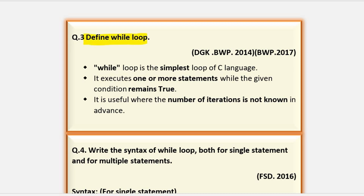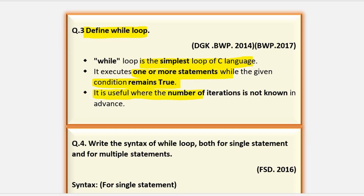Define while loop. While loop is the simplest loop of C language. It executes one or more statements while the given condition remains true. When the condition is true, the set of statements repeats. As soon as the condition is false, the loop is terminated. It is useful where the number of iterations is not known in advance. One repetition of the loop body is called an iteration.